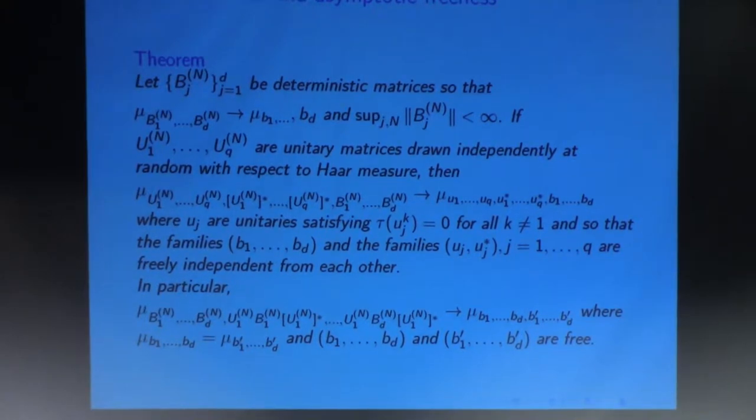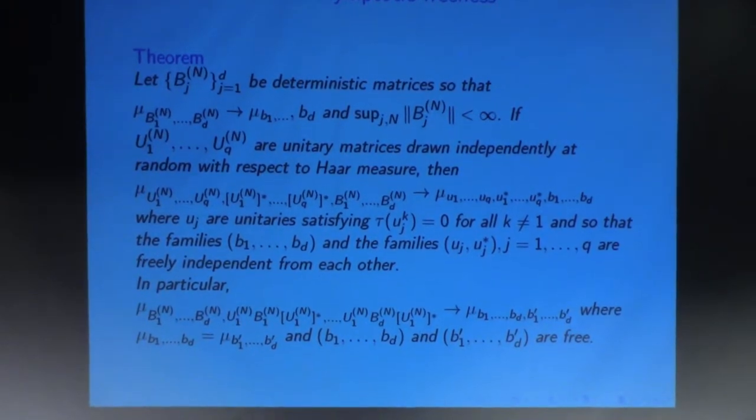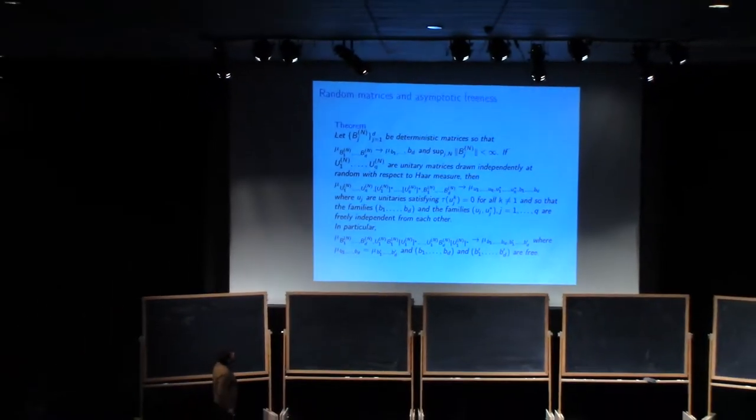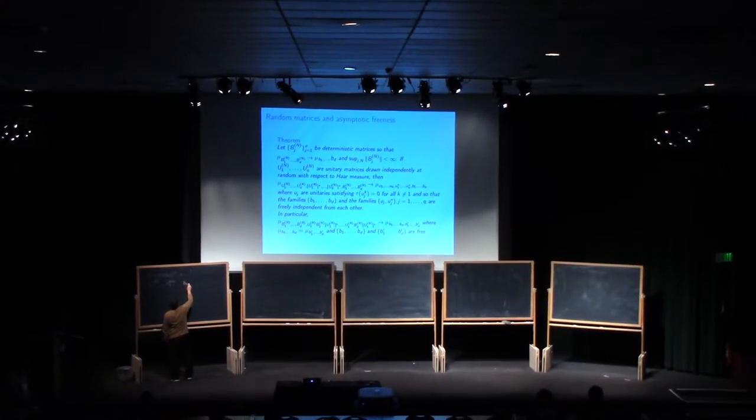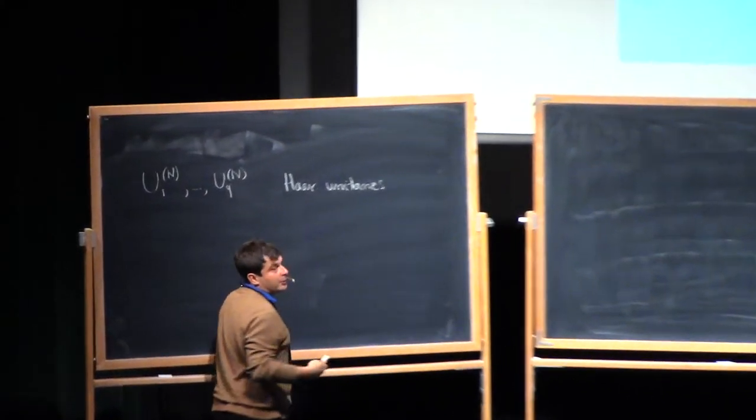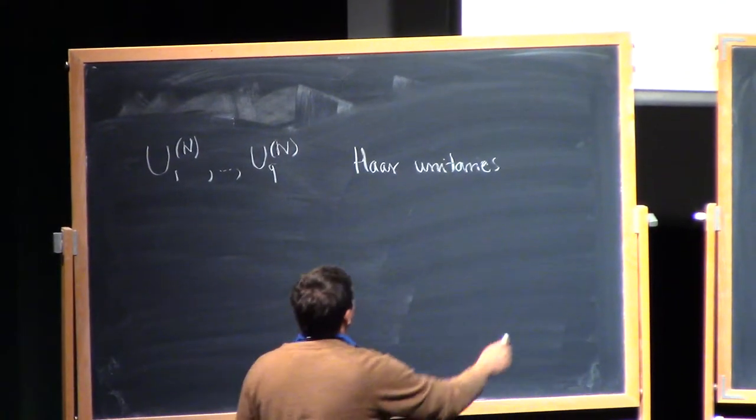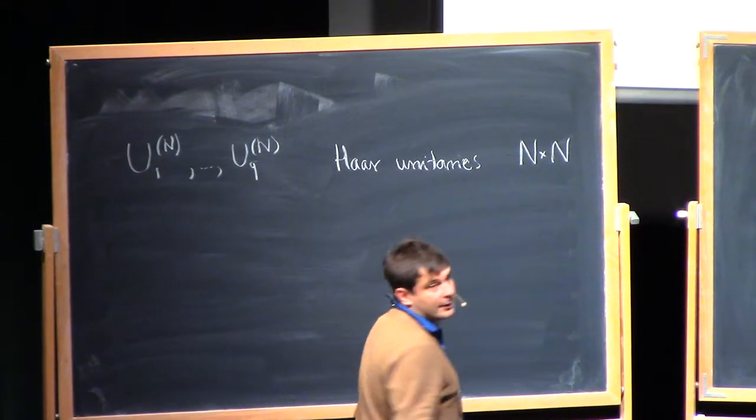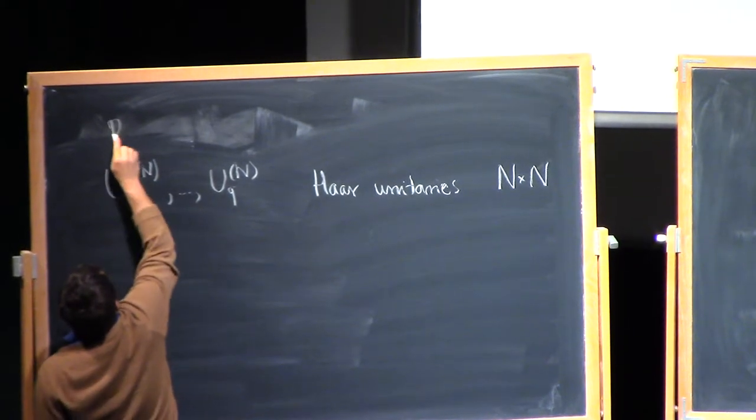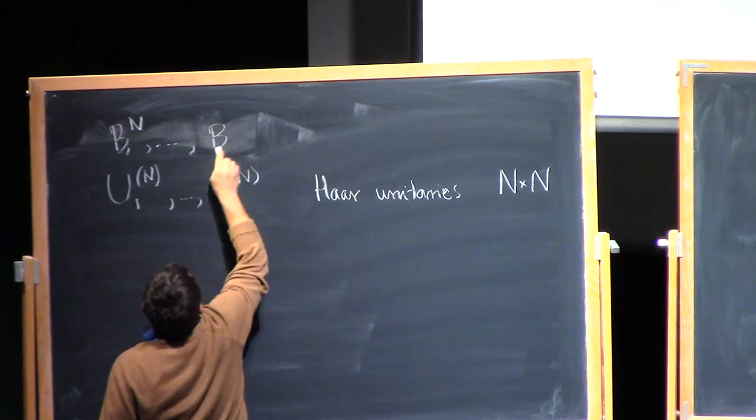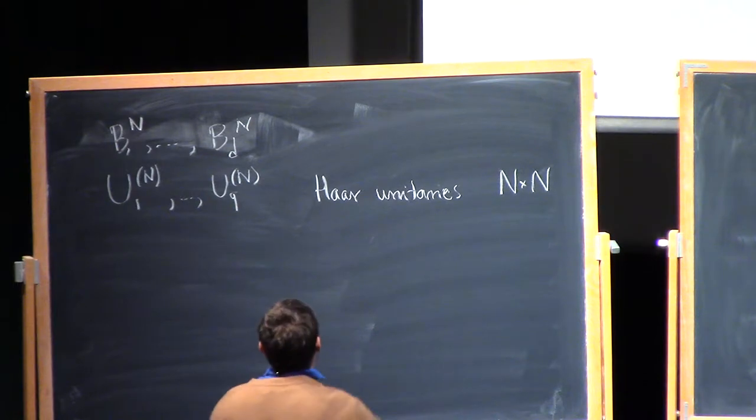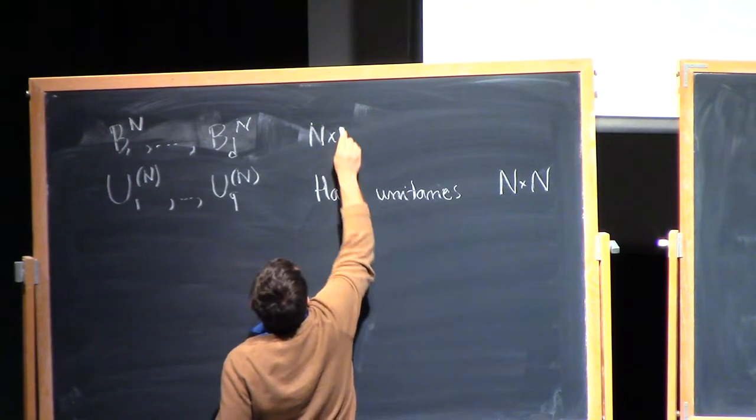You have first of all a bunch of matrices U_1N to U_QN. Q is an integer, just a number. So these are what are called HAR unitaries. That means that you sample them from the unitary n by n matrices with respect to the HAR measure of their underlying Lie group.